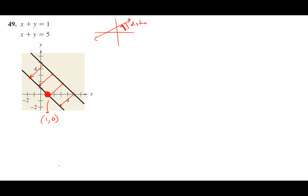That point is going to be one comma zero. Because the distance from one line to the other is always going to be the same — notice all the red distances. Now the question is which line is which? This line here is on top. If you plug in zero comma five, it's a solution: x plus y equals five. And one comma zero only works for x plus y equals one, which is the bottom equation.